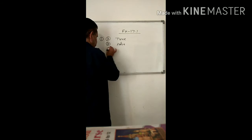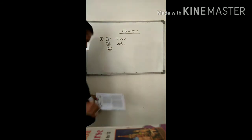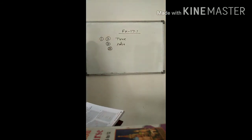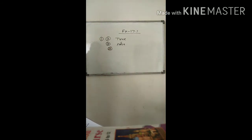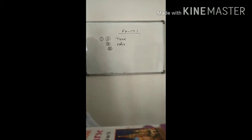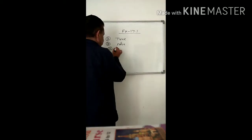3rd part: A point whose y-coordinate is 0 and x-coordinate — the coordinates of the origin are 0, 0. This is true.